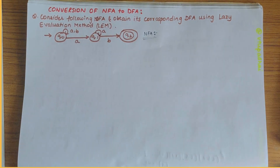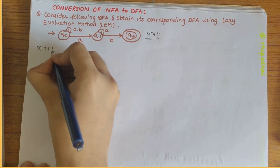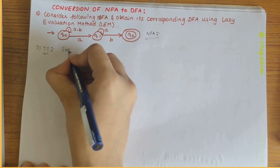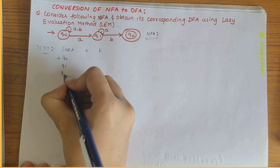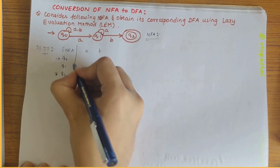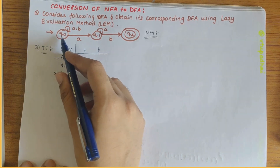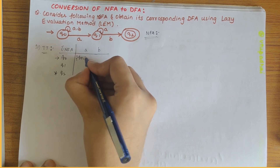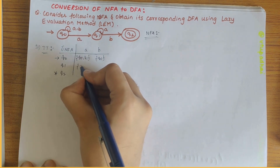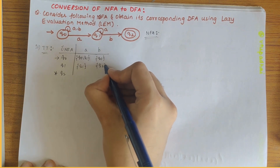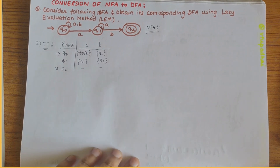From the given NFA, firstly we have to obtain the transition table — that is our first step. With a and b as inputs, q0 being the start state, q1 and q2 being the final states: q0 on a gives q0 and q1, q0 on b gives q0, q1 on a gives q1, q1 on b gives q2, q2 on a gives nothing, and q2 on b is also null.